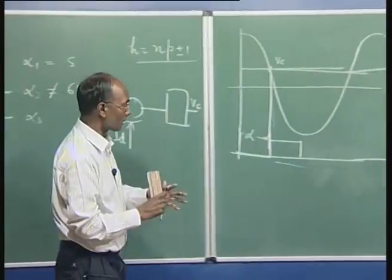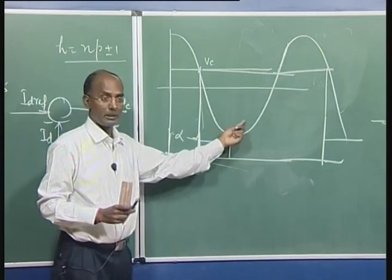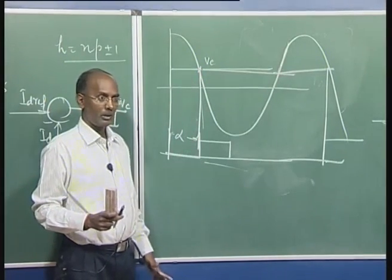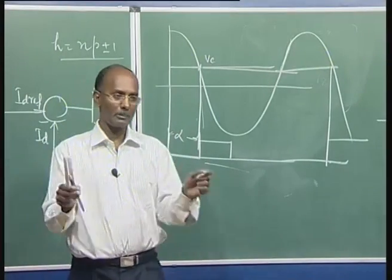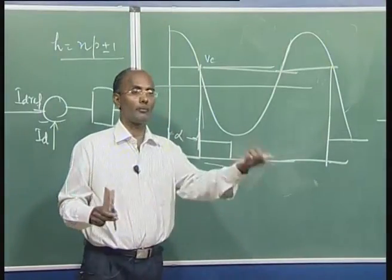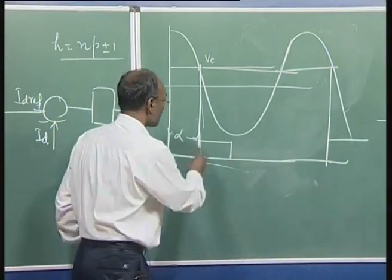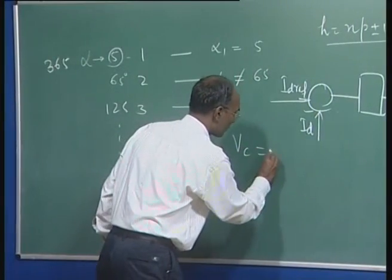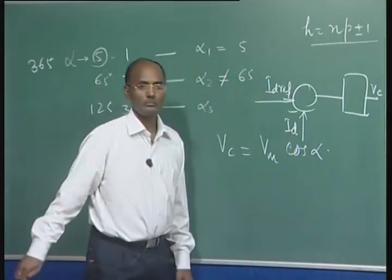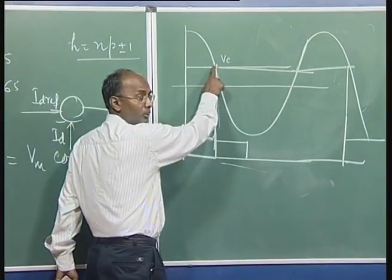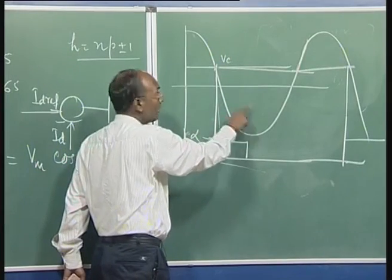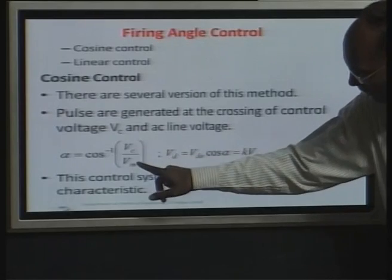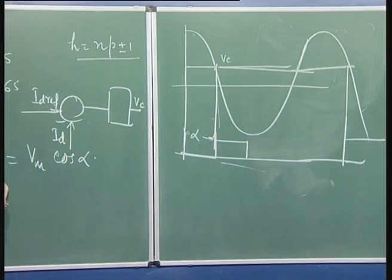For valve 1, this voltage cosine is compared with control voltage and wherever they are equal, a pulse is generated. The pulse duration is 60 degrees and can fire the valve until it is triggered. From this equation we can see that V_C equals V_m cos(alpha), because at this alpha value the cosine curve has that value. So alpha equals cos⁻¹(V_C / V_m). This is why cosine control is advantageous — our output voltage equation is a function of cosine.